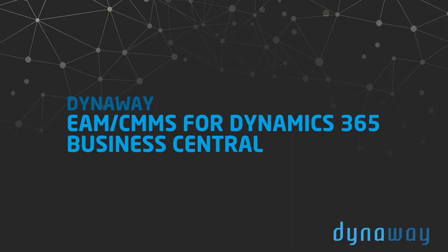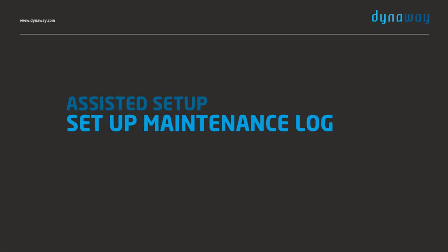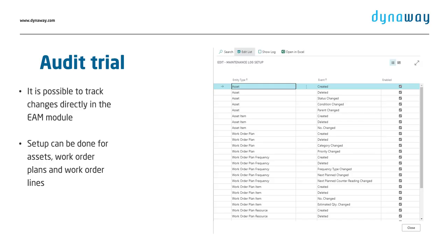Today I would like to show you how to set up maintenance log in Dynaway EAM Business Central. Maintenance log is an audit trail for who and when did the changes for the asset, work order plan, work order lines and frequencies.